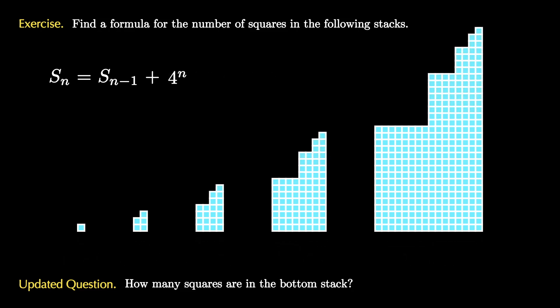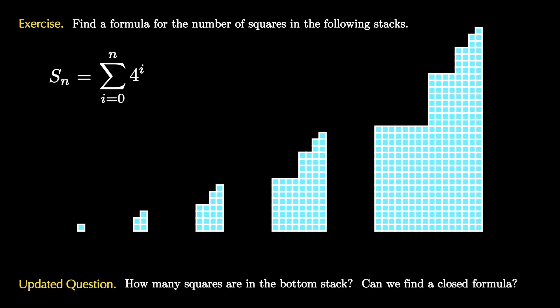We can repeat the recursion over and over and eventually notice that s_n is therefore the sum of 4 to the i, where i ranges from 0 to n. Can we find a closed formula for this sequence of partial sums?